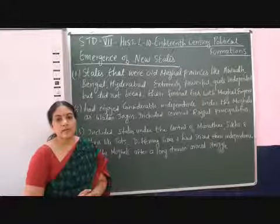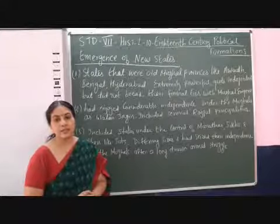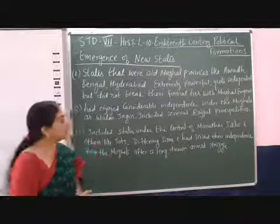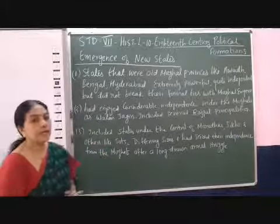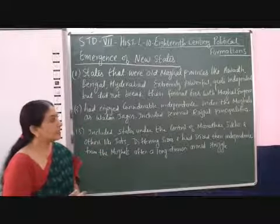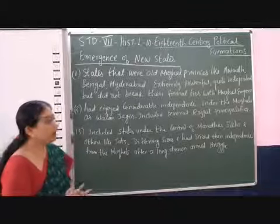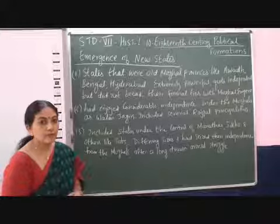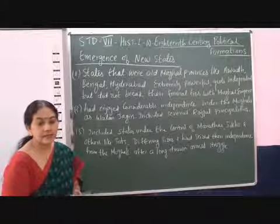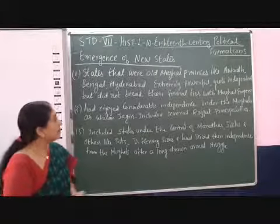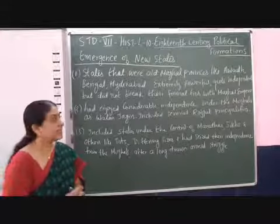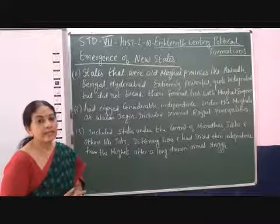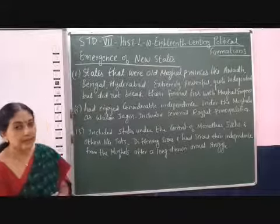The states which emerged during the 18th century can be divided into three groups. The first group includes those states that were under the old Mughal provinces, like Awadh, Bengal, and Hyderabad. These states were extremely powerful and quite independent, but they did not break their former ties with the Mughal Emperor — they always maintained their relationship with the Mughal Emperors.